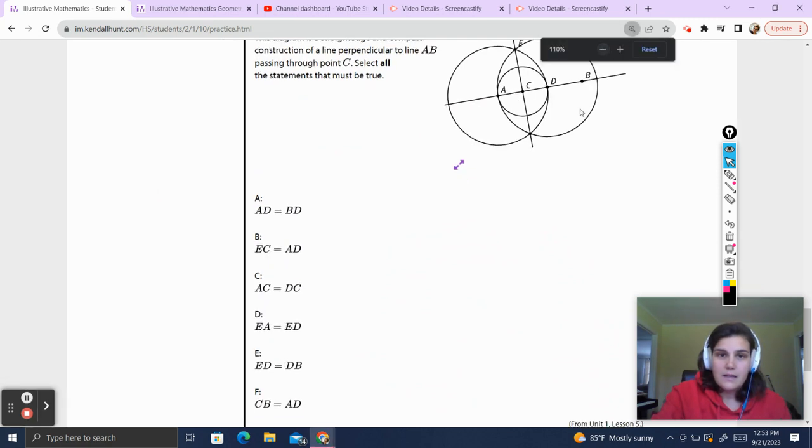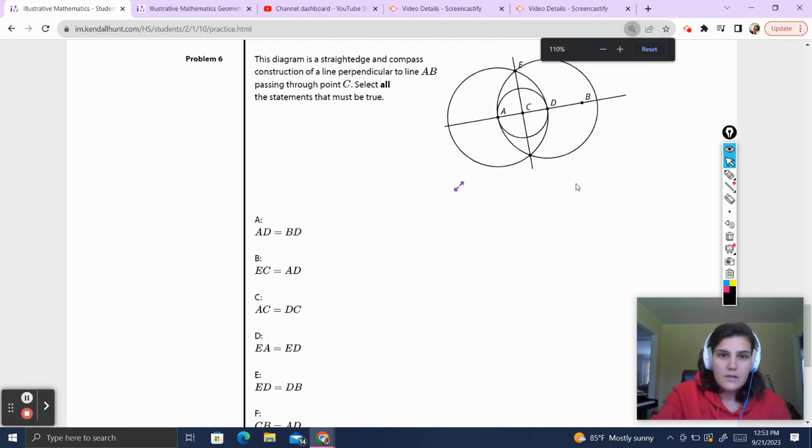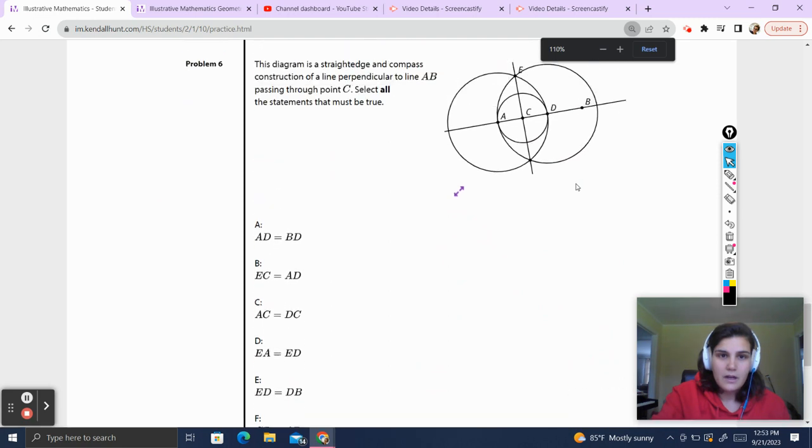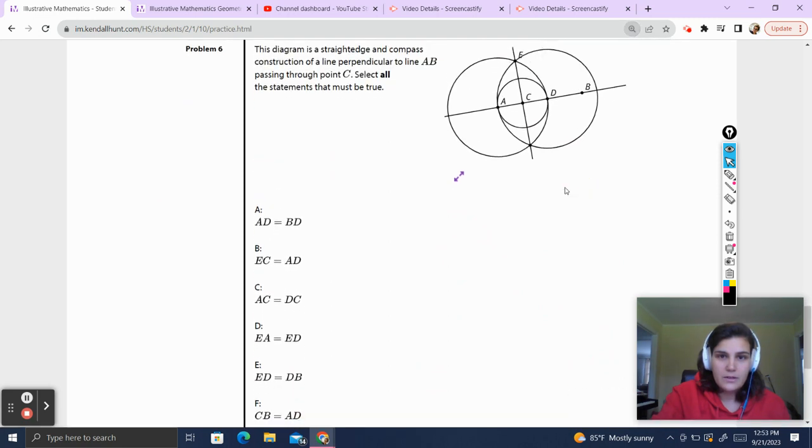Problem number six. Let's make this the right size. The diagram is a straight edge encompassed construction of the line perpendicular to AB. So we have AB, and we have a line perpendicular to it. So AB is over here. Our line perpendicular to it is this guy right there. It passes through point C. C is over here. Select all the statements that must be true.